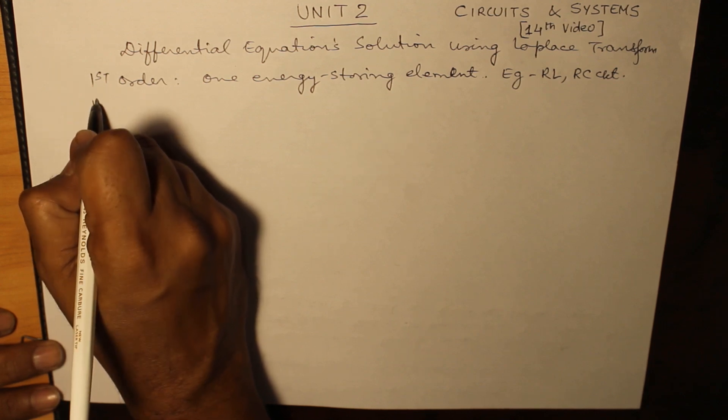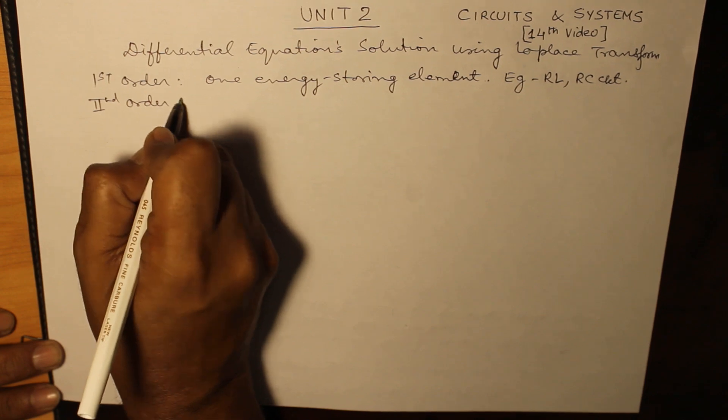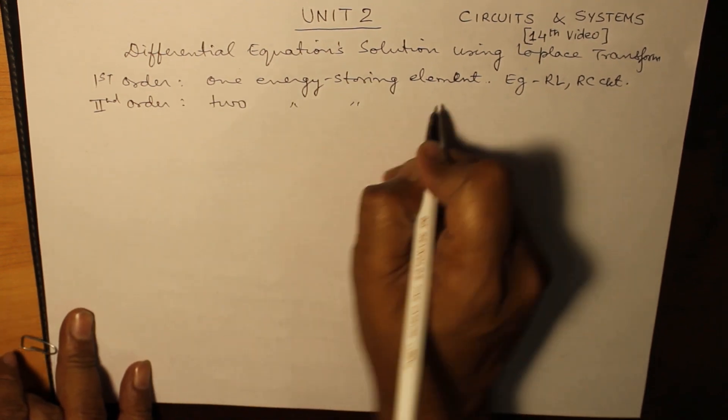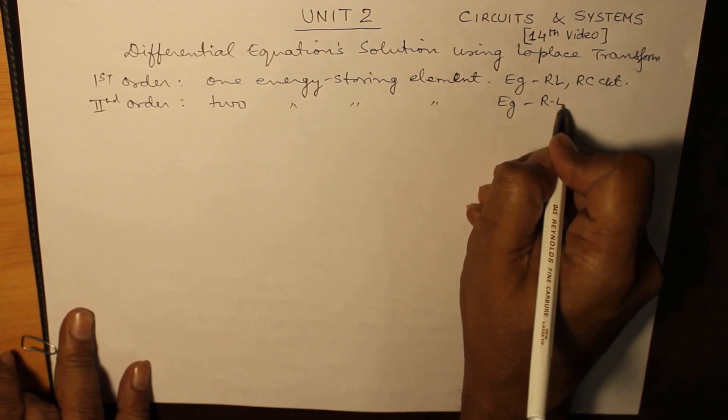The example of second order circuit in which there are two energy storage elements is RLC circuit, series RLC circuit.